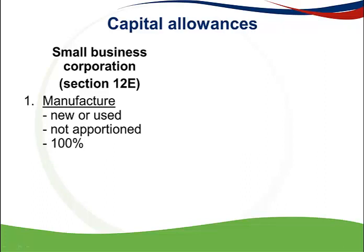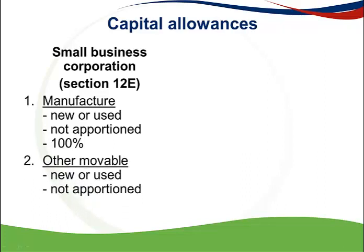The second special capital allowance that a small business corporation can claim is for other movable assets — any assets used in the taxpayer's trade that are not part of the process of manufacture, for example vehicles, furniture, and computers. The assets can be new or used, and the allowance is not apportioned. The cost is claimed over three years: 50% in the first year, 30% in the second year, and 20% in the third year.